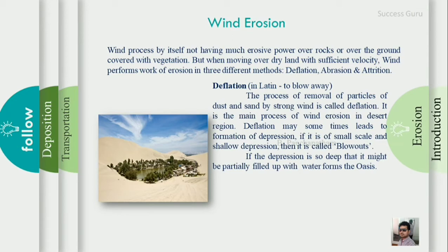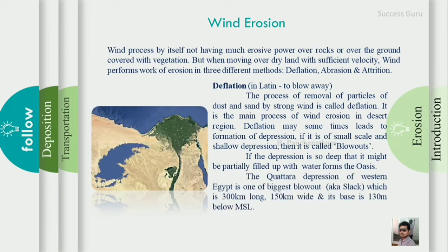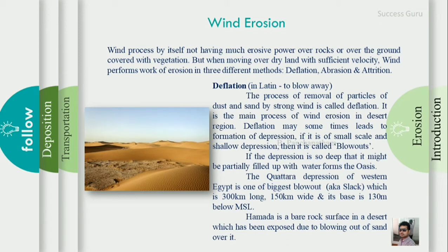A blowout depression is called a blowout. In western Egypt, there is a Khattara depression — a blowout. Its size is 300 km long, 150 km wide, and the base is 150 meters deep. This is a blowout or slack in western Egypt. When the mantle material is deflated and a rock portion is exposed, this is called Hamada. This is a deflation process.